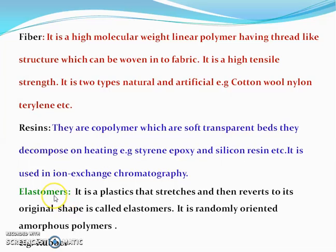The next term we have discussed is elastomers. Elastomers are plastics that stretch and then return to their original shape. They are randomly oriented amorphous polymers. They should have some cross-linking so the chains do not slip over one another. When elastomers are stretched, the molecules which were random become oriented in one direction, but the intermolecular forces are insufficient to maintain them in that arrangement.